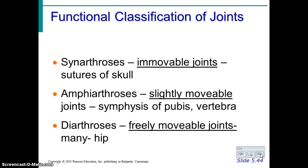If we look at their functional classification, we have three different classifications. Synarthrosis refers to joints that are immovable, such as the sutures of your skull. The second type are slightly movable and they would be amphiarthrosis. Examples of those would be the symphysis of the pubic area or where two vertebrae come together.